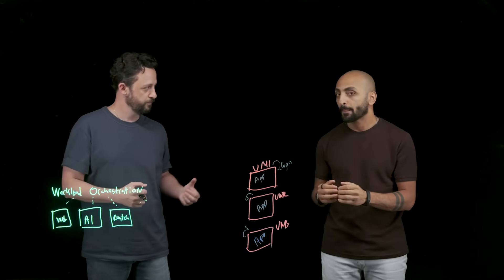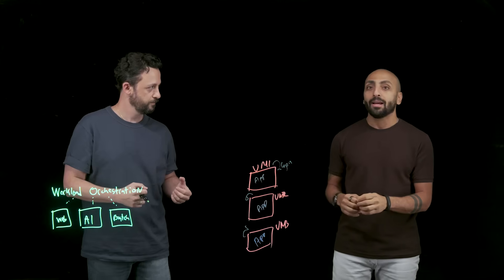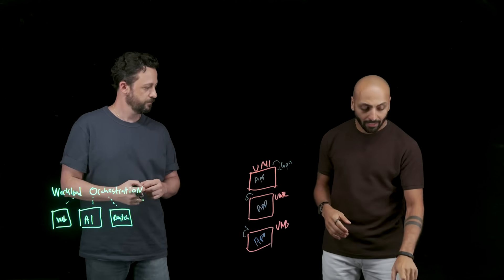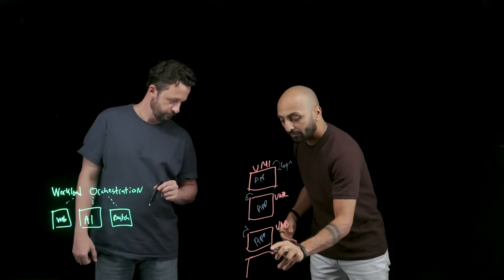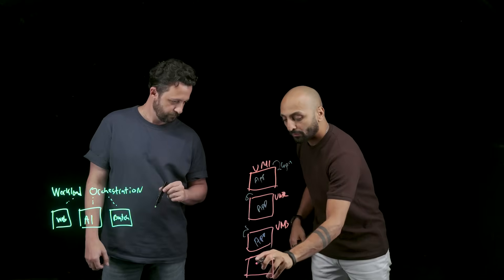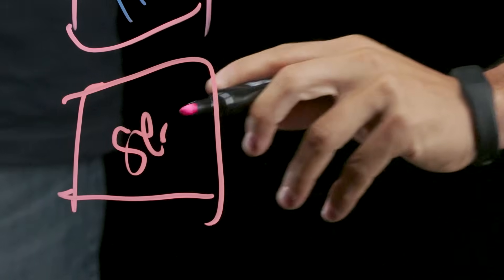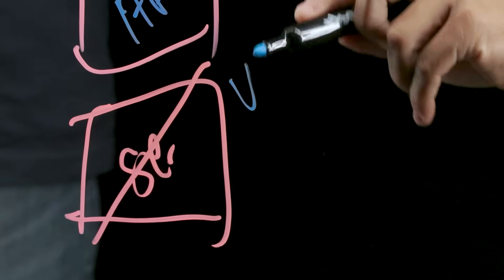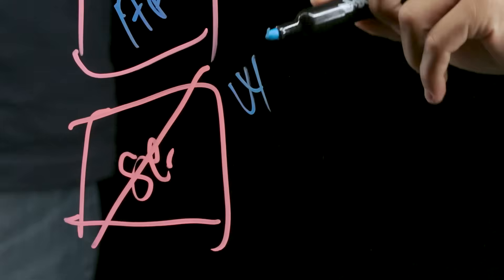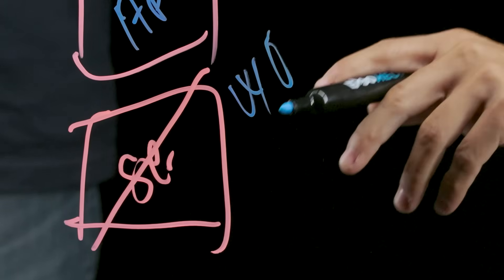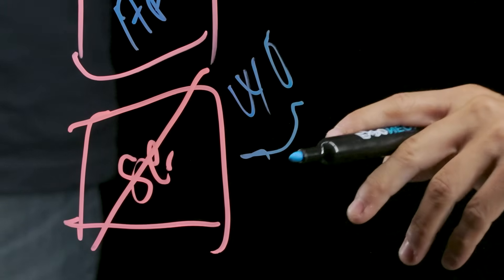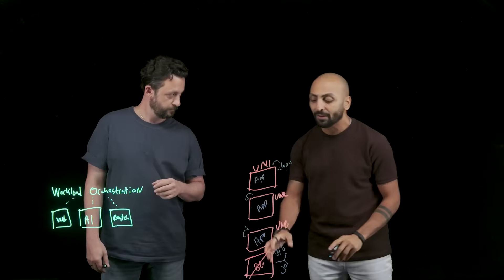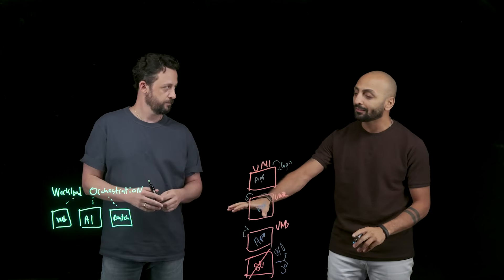Can you give me an example? Yeah. So for example, if we have a server here and this server failed, the workload orchestrator — I would say WO — will automatically check the job and bring it back to the same state.